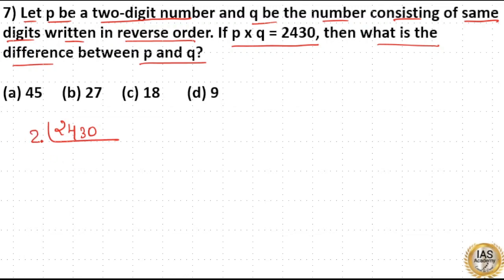Prime factors are: 2 goes into 2430, then 3 goes into 1215, again 3 goes into 405, again 3 goes into 135, then 3 goes into 45, and finally 3 goes into 15 to get 5.